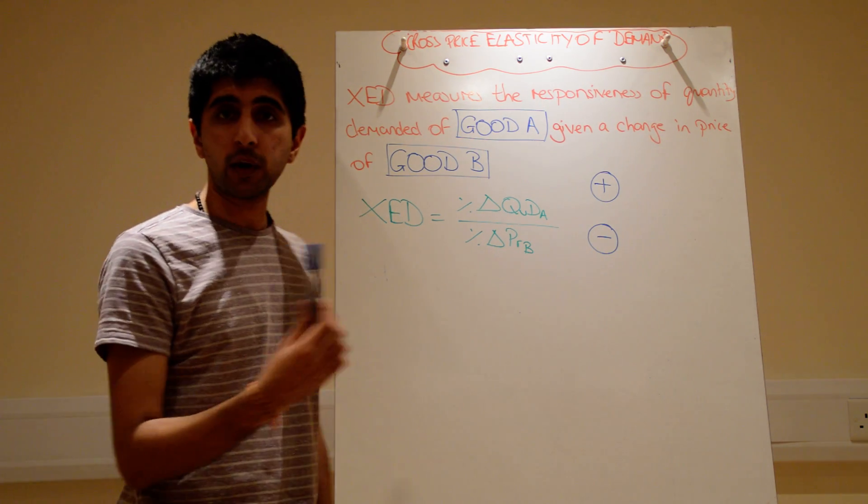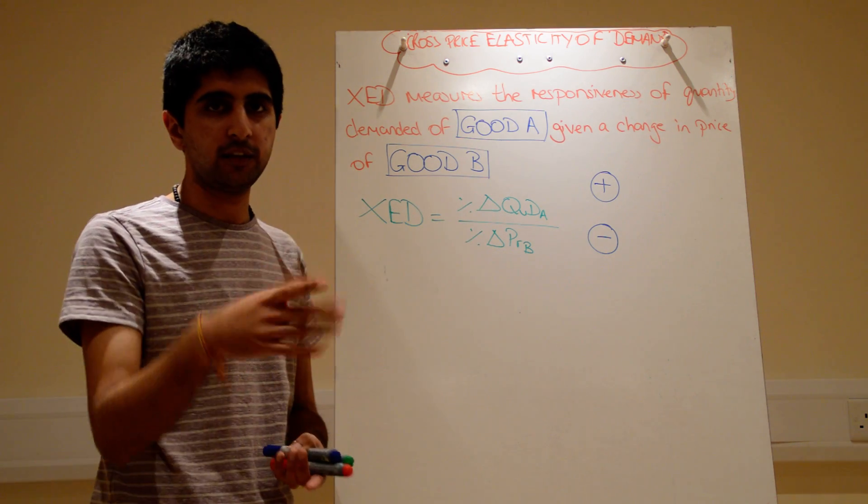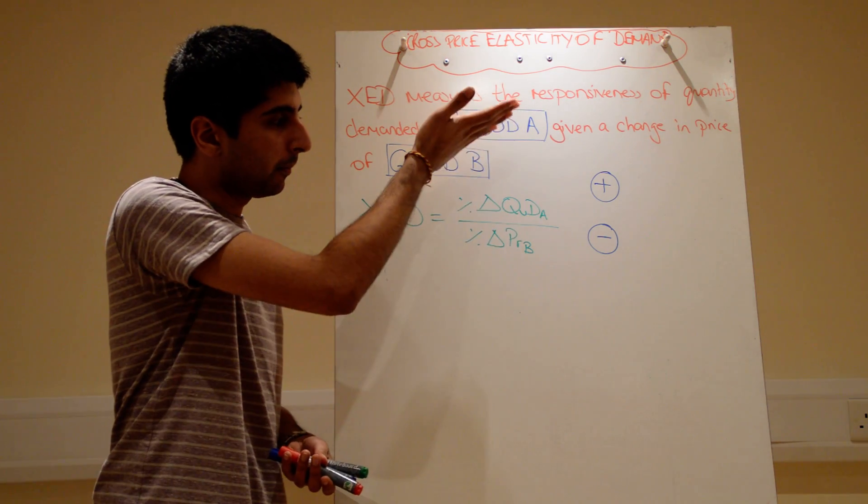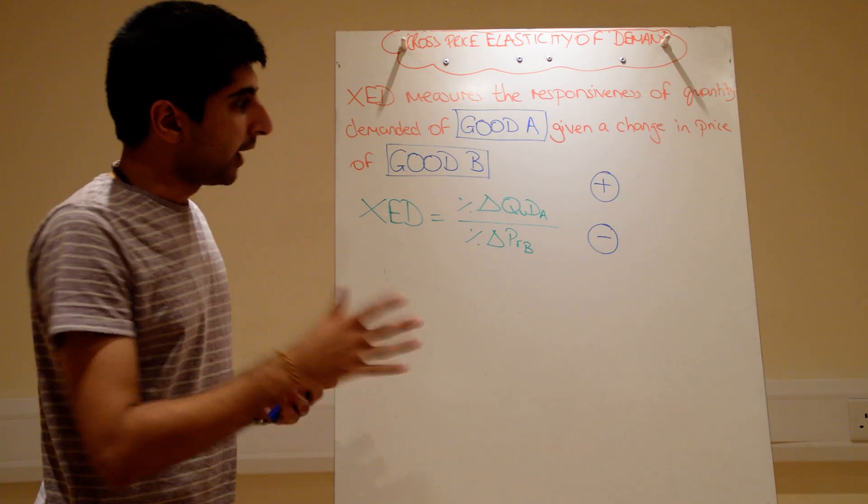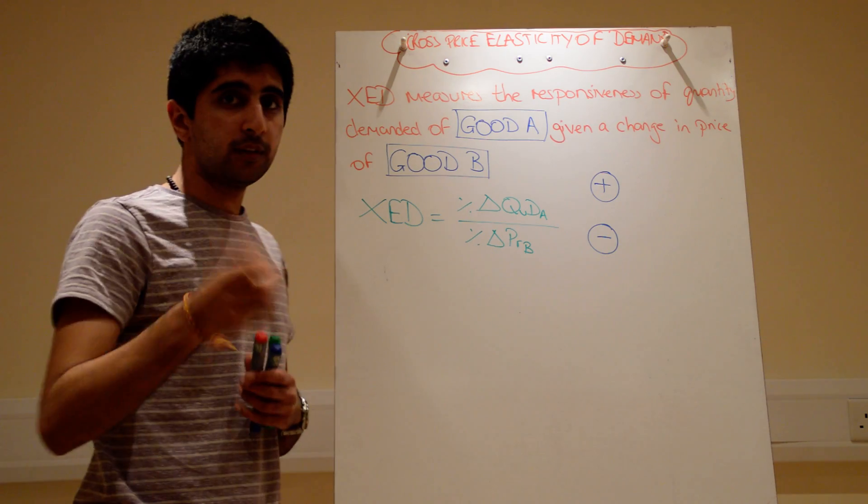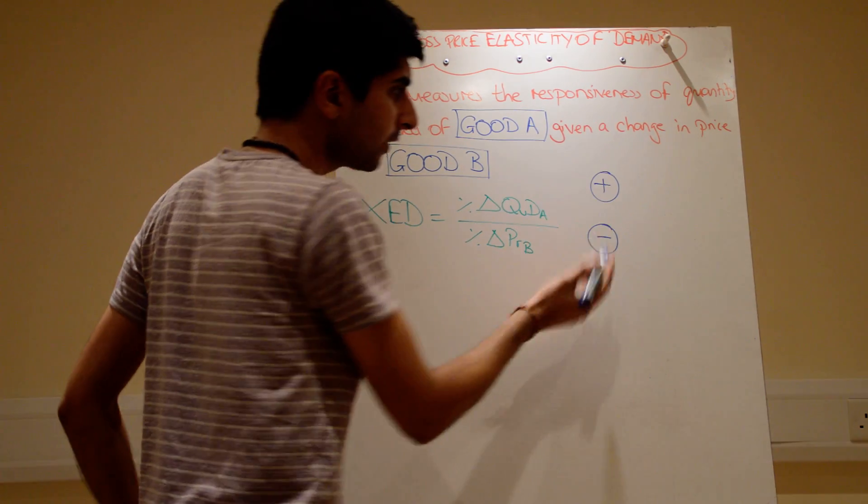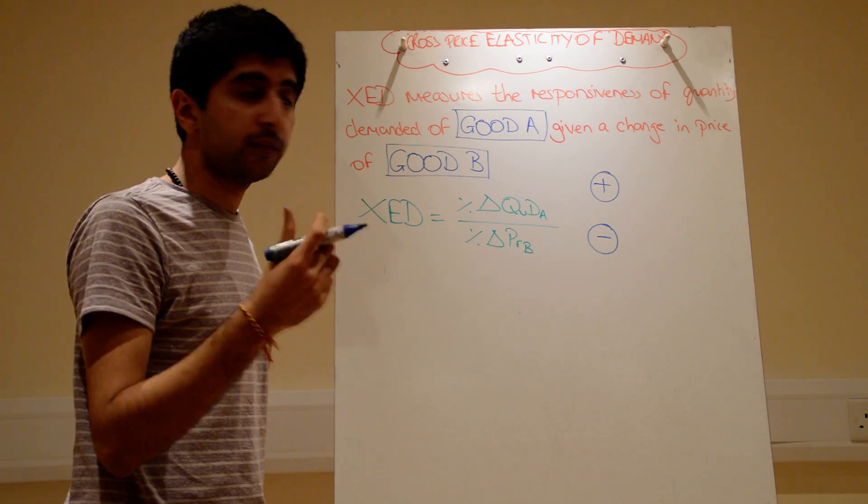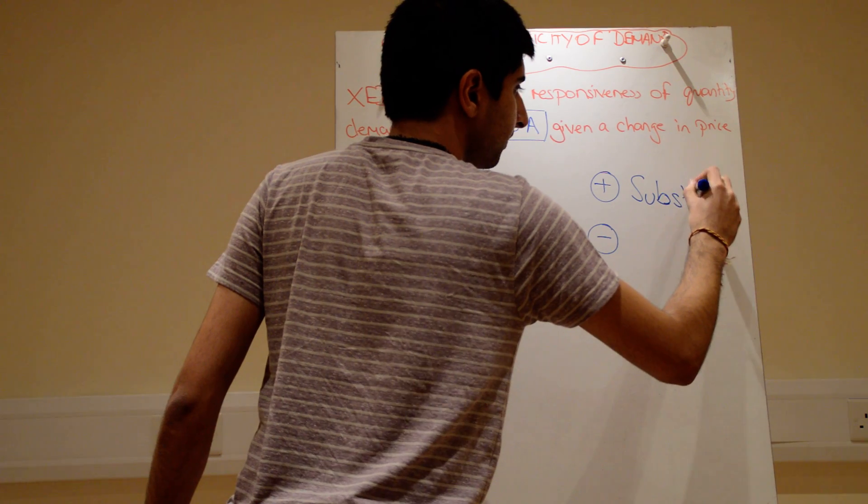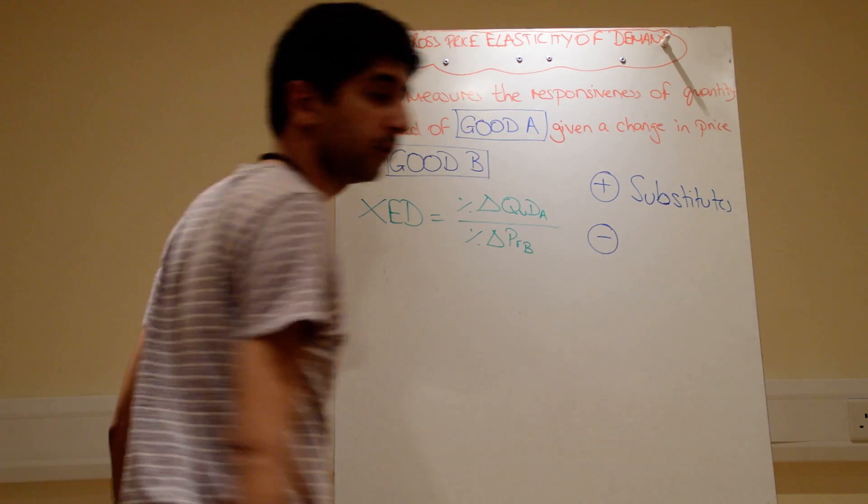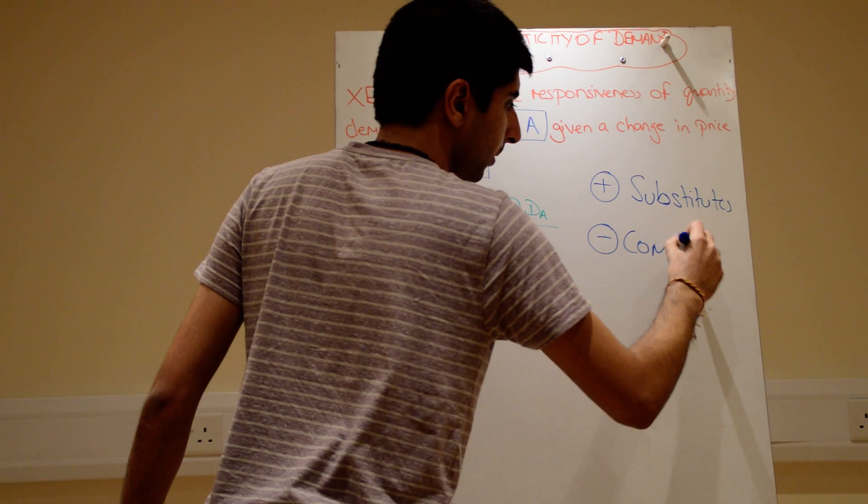Again, no calculation I want to do. It's a very simple calculation. You should stick in, save the percentage change calculations to the PED, work it out, stick into the equation, get your figures. But again, the signs are important. Just like the YED, the signs are very important. Why? Because the signs tell us the types of goods they are. A positive XED figure tells you that the goods are substitutes, whereas the negative figure tells you that the goods are complements.